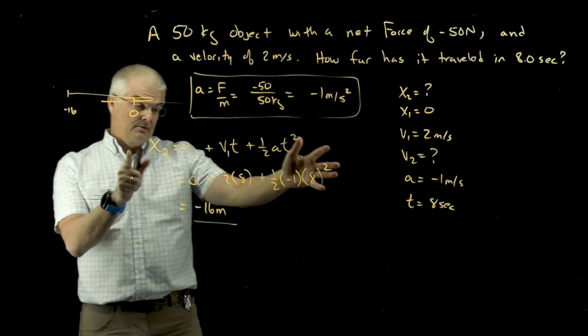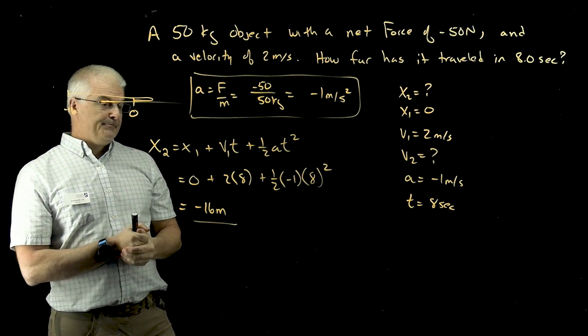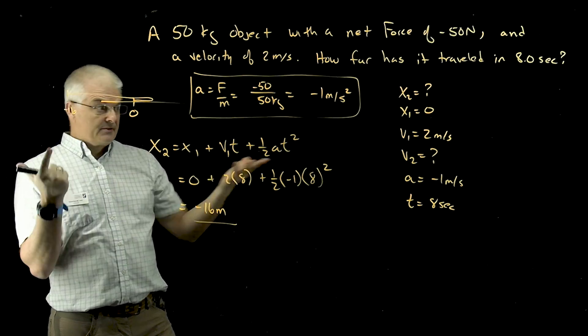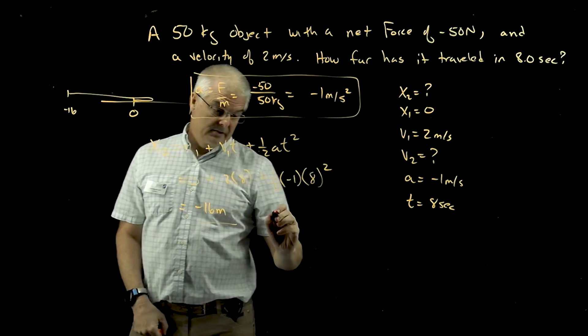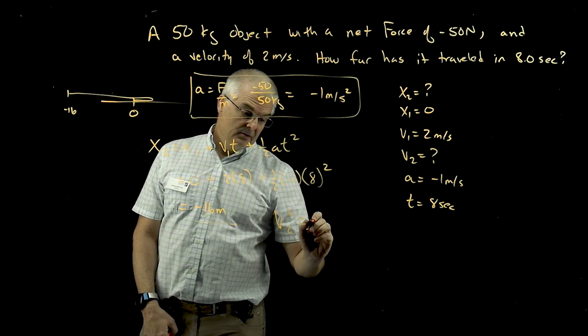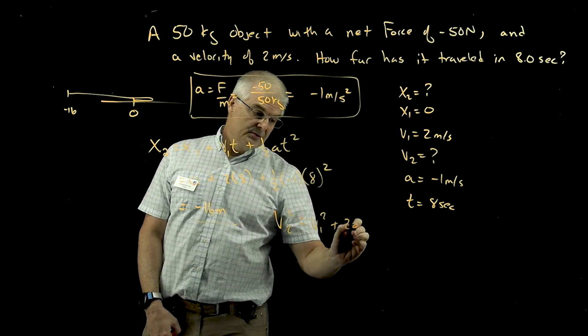Because what's going to happen is these things are going to get jumbled in your mind probably. You've got all the equations. I just used, you know, we call it equation 1. And there's, you know, we could use the other, I could say, what's the final velocity of V2?